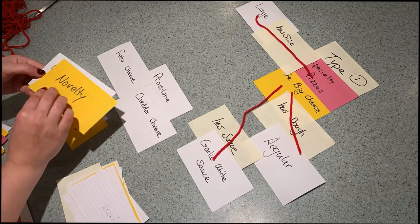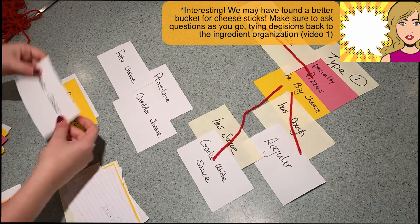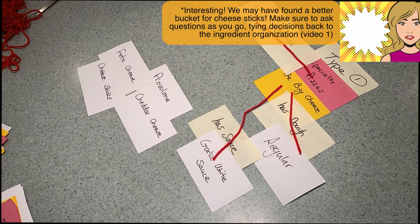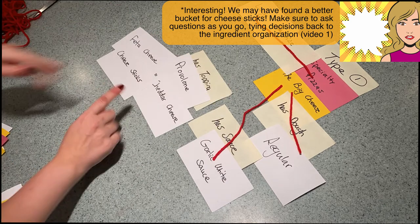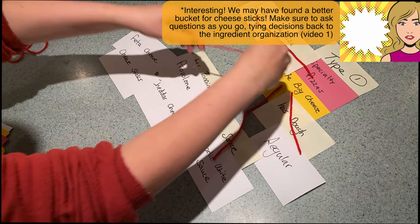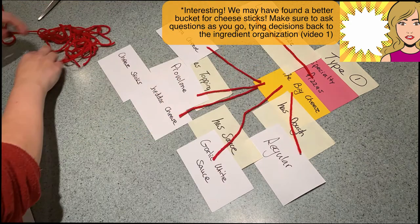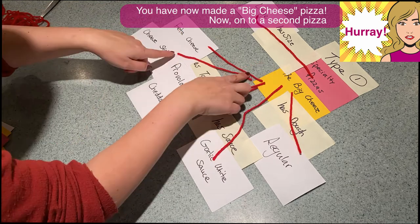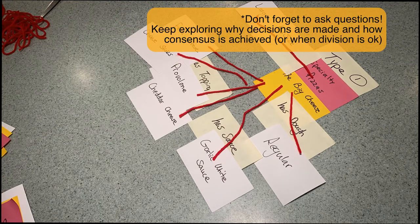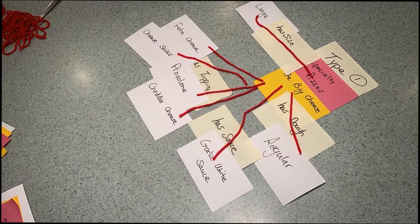Hold up — novelty! That's interesting. Before, when we were creating these buckets in our original video, I didn't know what cheese sticks was used for. But here we can see it's actually a type of topping for a specialty pizza. Eureka! Now we can go back and refine not only the model we're creating now but the model we had originally created, adding refinement. Now our Big Cheese pizza is all done. Make sure as you make decisions about ingredients, relationships, and organization, you ask questions — understanding people's decision process is incredibly important.